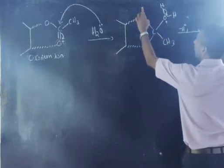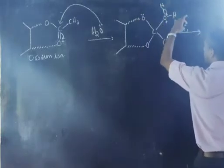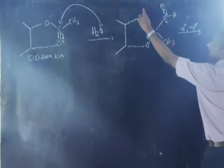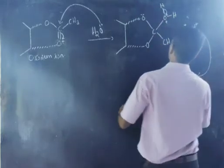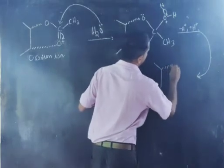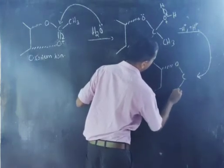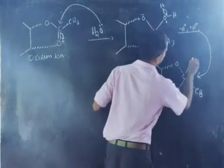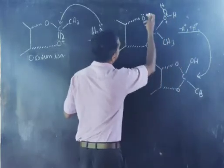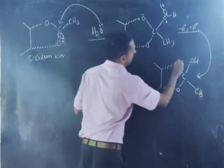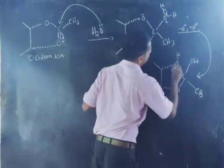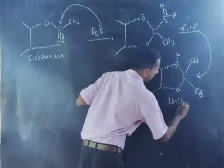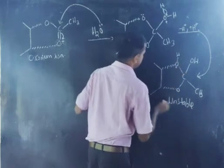The lone pair present on this oxygen atom will abstract this proton, meaning plus H⁺. This is deprotonation here and protonation here. We get a structure where it is C with two OH groups and CH₃, with an OH carrying a positive charge. This structure is highly unstable — there are two OH groups on the same carbon.